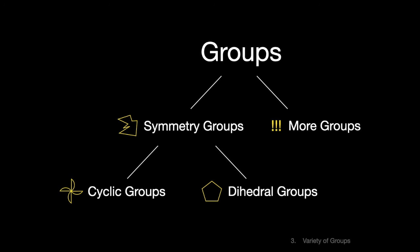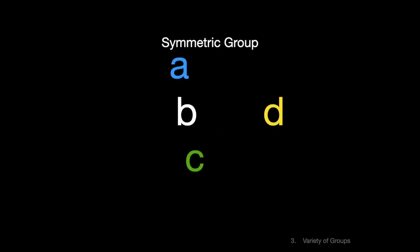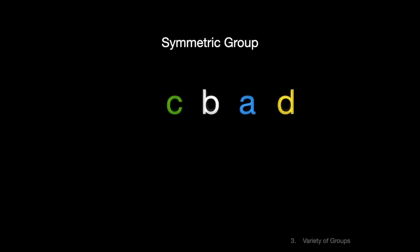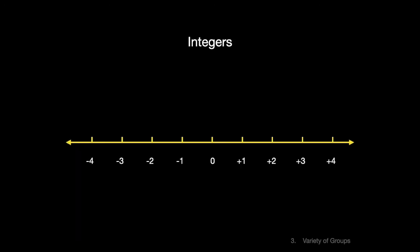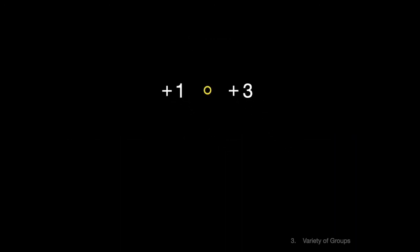For instance, there's another kind of group that has permutations of things as its elements. Another uses invertible matrices. Even the integers on the number line are a group, whose operation is addition.